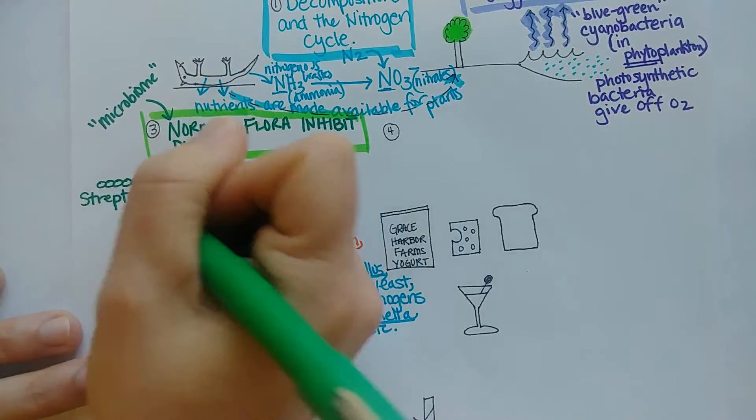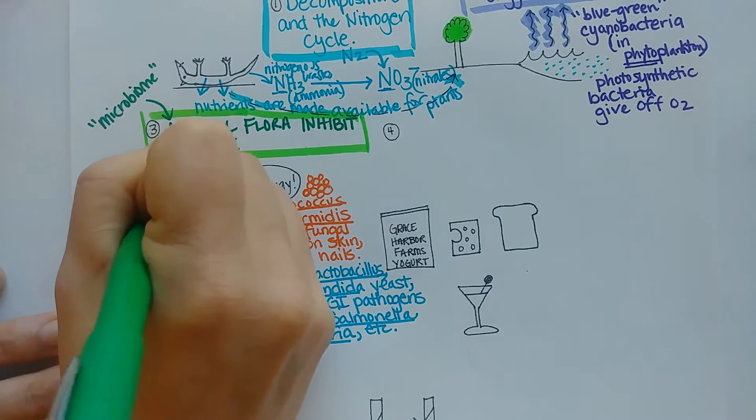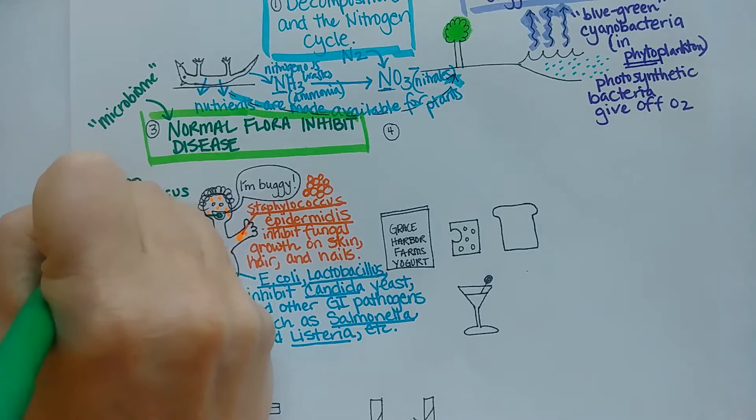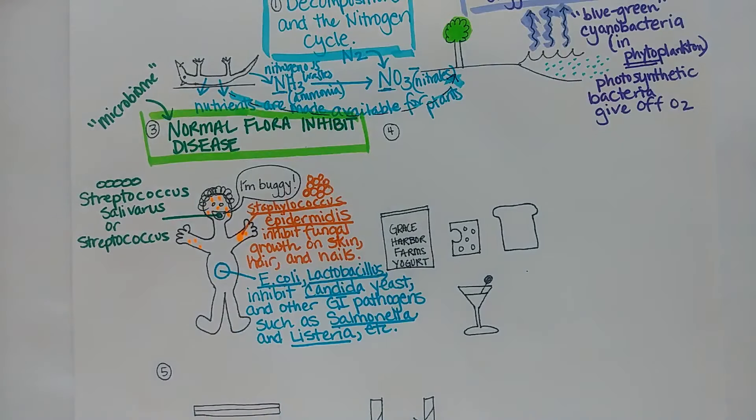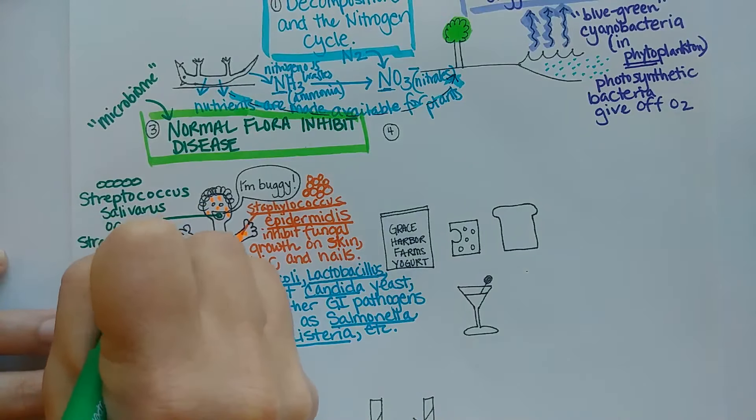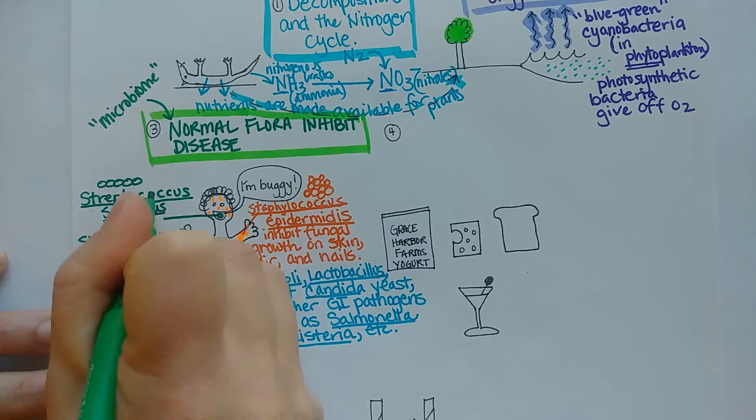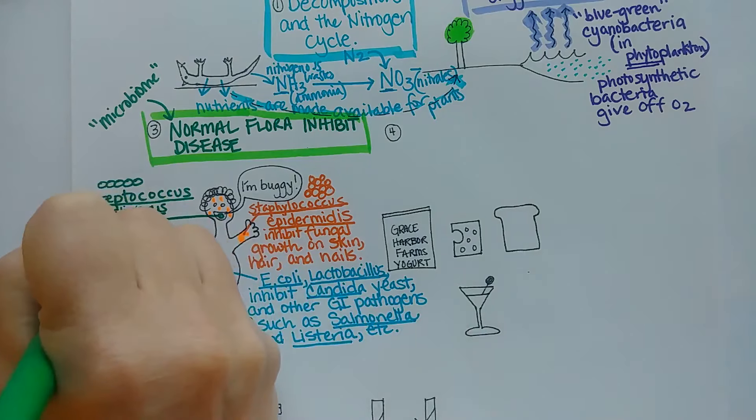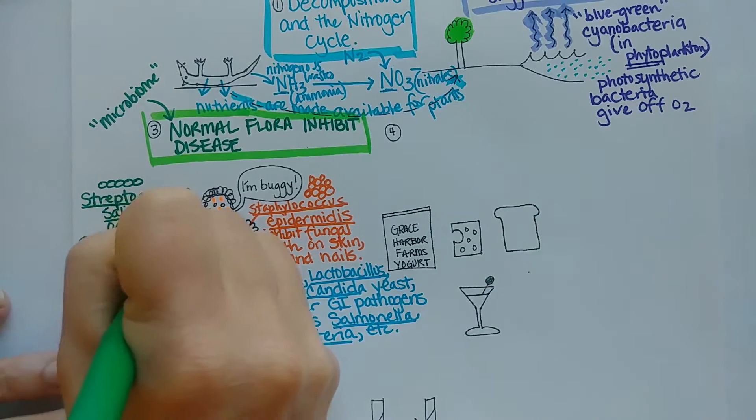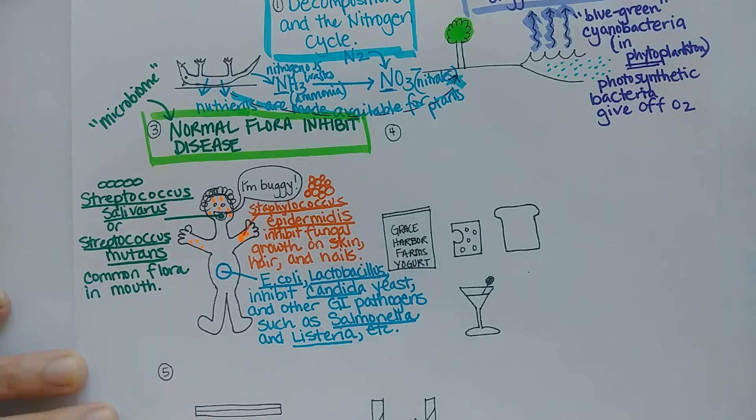It's not really mutating them, but it's making cavities, so it's decaying them. Mutans has a bad connotation. Streptococcus salivarius is probably more important in protecting teeth. These are common flora in the mouth, and if they get out of balance or wiped out, then Candida can grow there too.